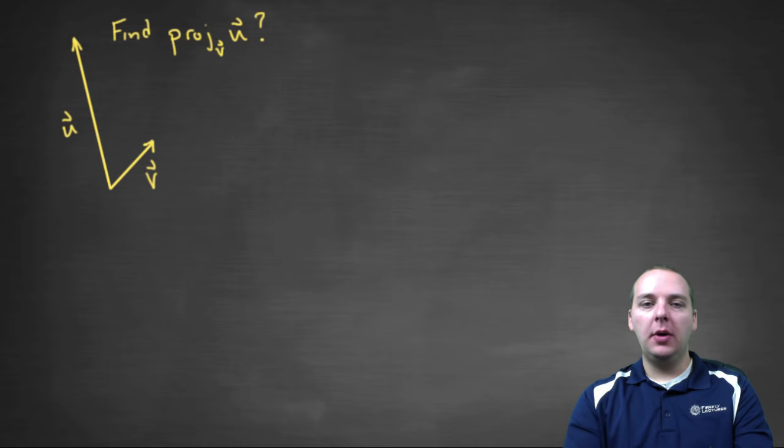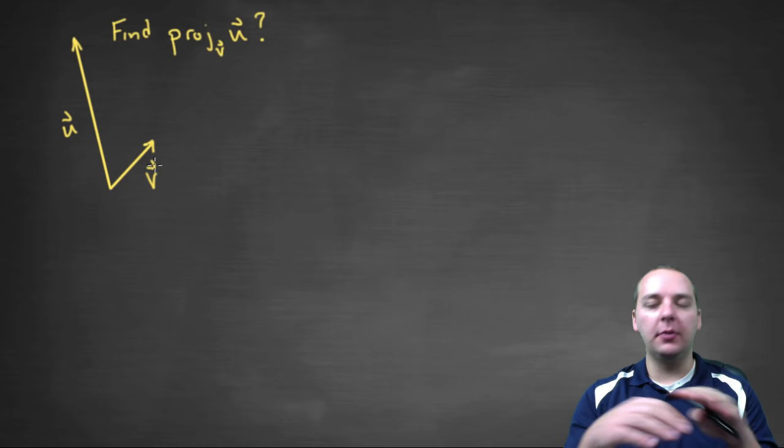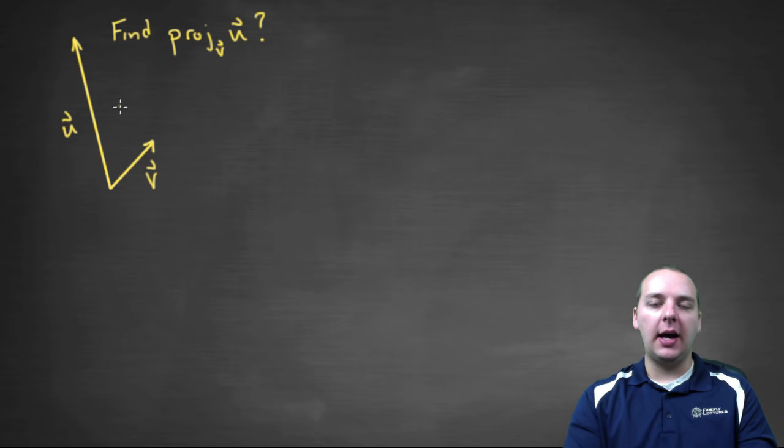Alright, let me reorient this picture here and let's see if you can find just what the projection would look like. So here's u, here's v, I've kind of flipped them all around because they're not always going to be pretty and nice and flat and that sort of thing. Can you visualize what the projection of u onto v would look like?